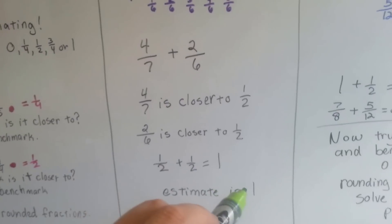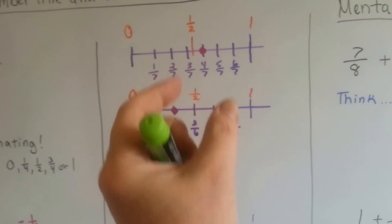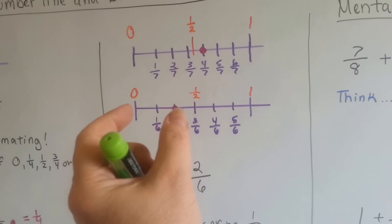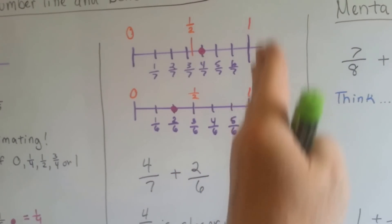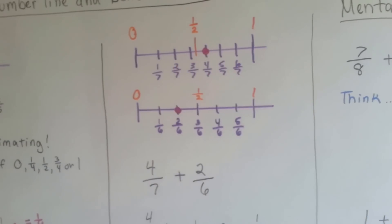A half and a half is one whole. And if you look at this, and you take 2 sixths and you add it to 4 sevenths, it is about one whole. See? We're adding about that much to here.